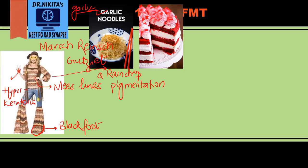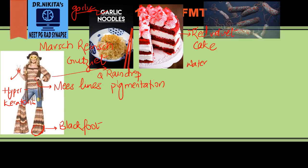Once she reaches the pub, she likes eating Chinese, so she orders garlic noodles — representing the garlic odor seen in arsenic poisoning. Then she orders a red velvet cake for dessert — the red velvet represents the appearance of the stomach mucosa in arsenic poisoning.